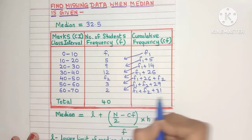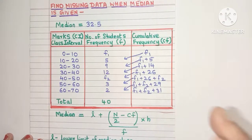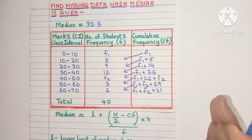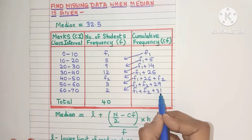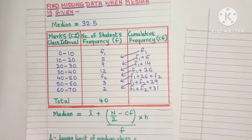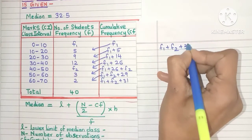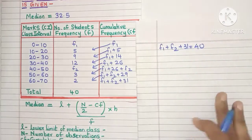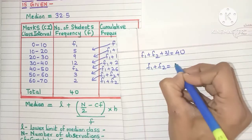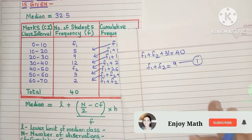The last cf value always gives us the total number of observations, and it is already given that 40 is the total number of observations. So we can say f1 plus f2 plus 31 equals 40. Bringing 31 to the other side, we get f1 plus f2 equals 9. Let's call this equation number 1, because we will need it later.